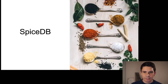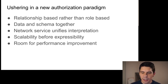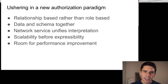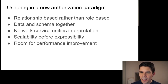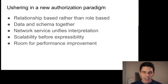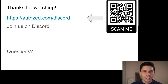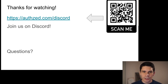That's SpiceDB. A quick recap: we're ushering in a new authorization paradigm for people outside of Google — relationship-based rather than role-based. We put the data and schema together to give a consistent network view that multiple services and applications can rally around. We prioritize scalability before expressibility — systems like Datalog policy evaluators can express amazing things but won't get to 20 million QPS with the same ordering guarantees as Zanzibar and SpiceDB. Join our Discord for development discussion and community support.